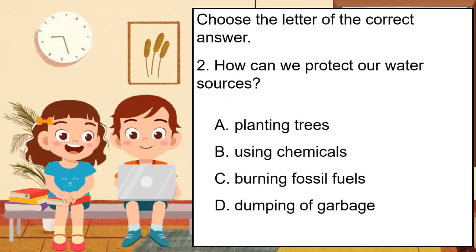How can we protect our water sources? A. Planting trees. B. Using chemicals. C. Burning fossil fuels. D. Dumping of garbage. The correct answer is A.